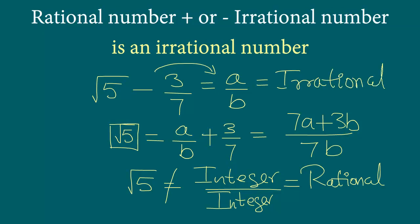Now if the question were to simply ask you to prove that square root 5, or square root 7, or square root 11 are themselves irrational, then you must use the method from the previous video where we proved square root 2 is an irrational number.